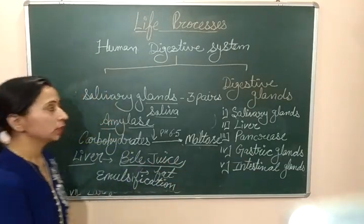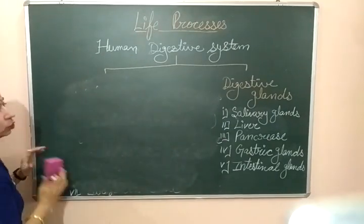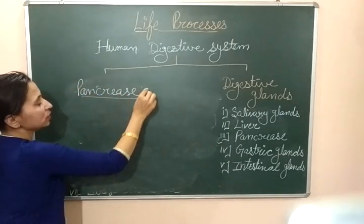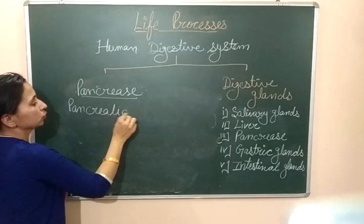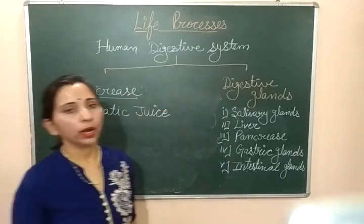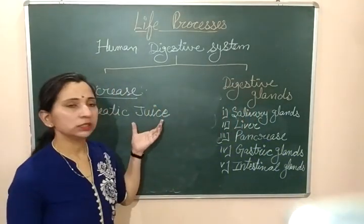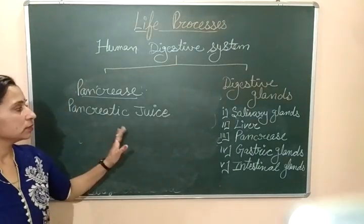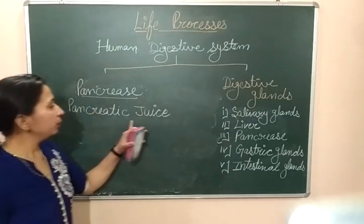The third gland is the pancreas. The pancreas is a gland located near the stomach and has a leaf-like appearance. The pancreas secretes pancreatic juice, which contains important enzymes for the digestion of carbohydrates, proteins, and fats. This pancreatic juice, along with bile juice, is secreted into the small intestine when food reaches there, so that digestion can be done easily.